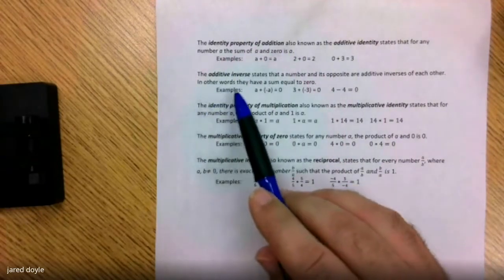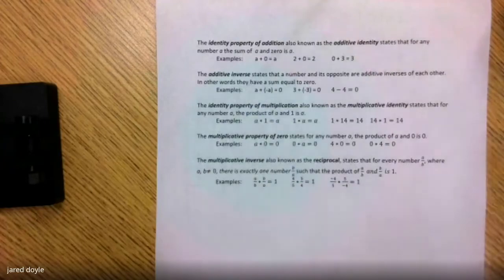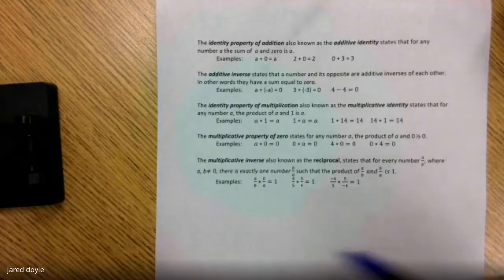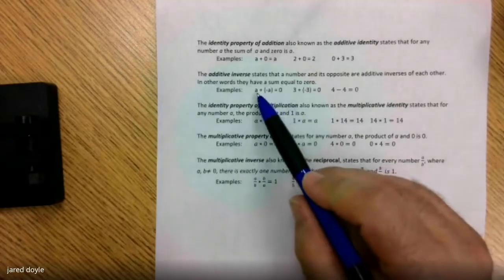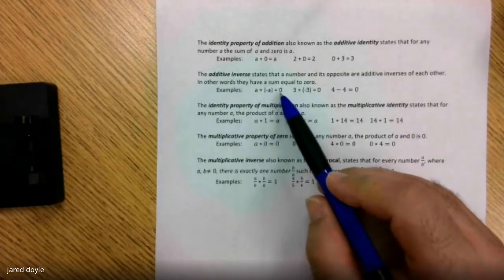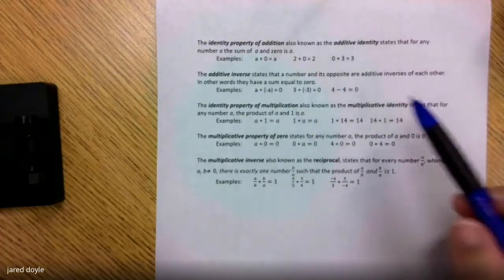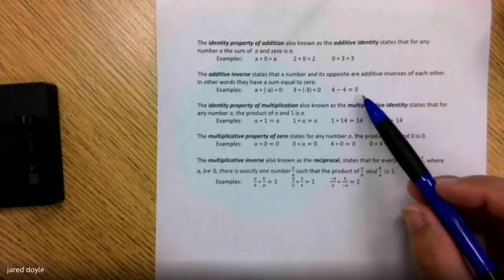The next property, the additive inverse, states that a number and its opposite are additive inverses of each other. Basically, if you add two numbers together and their sum is zero, they're additive inverses. So a plus negative a gives you a sum of zero. Three plus negative three equals zero, and four minus four equals zero.